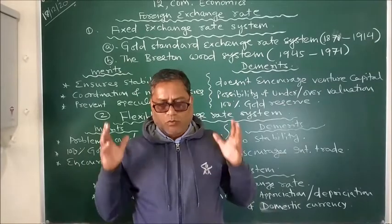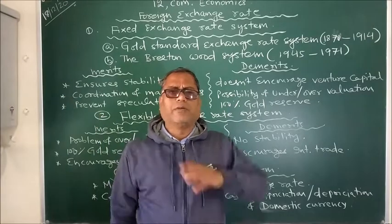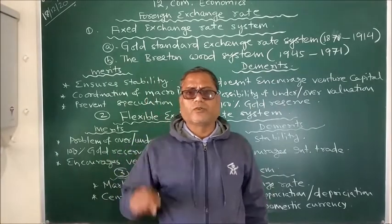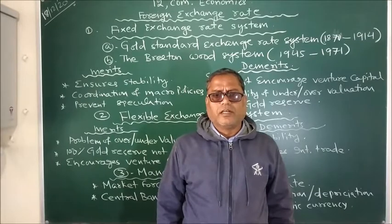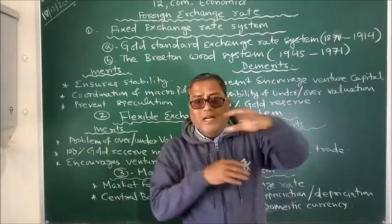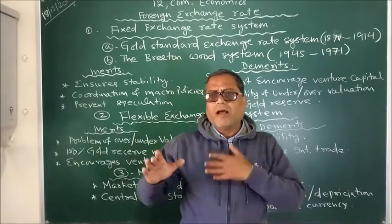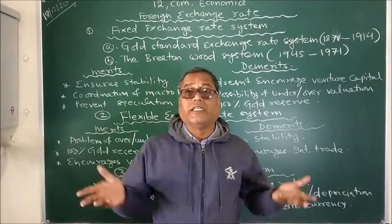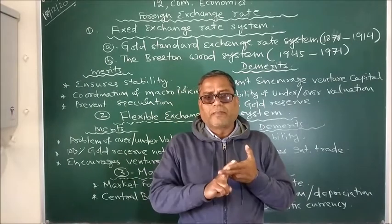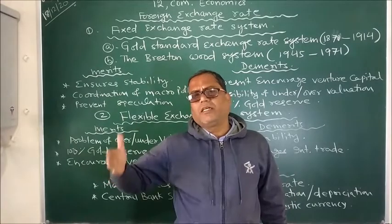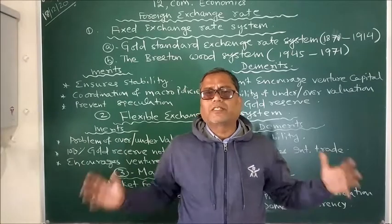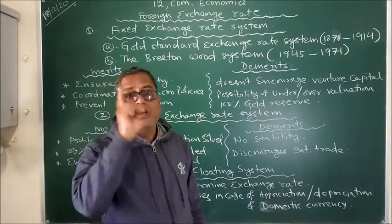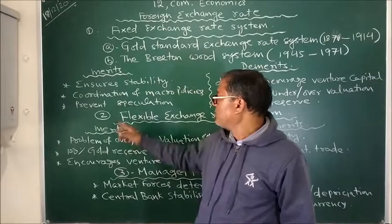Let me explain the meaning of coordination between different macro policies. We have different macro policies related to agricultural sector, industrial sector, tertiary sector, and power and energy sector. While making and implementing these policies, we have to make transactions with other countries. Once there is stability in foreign exchange rate, there is no disturbance in establishing perfect coordination among different macro level policies. That is another merit of the fixed exchange rate system.